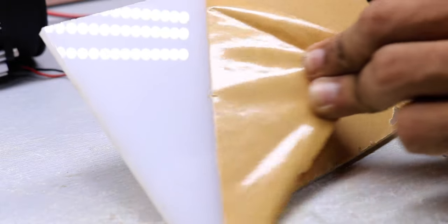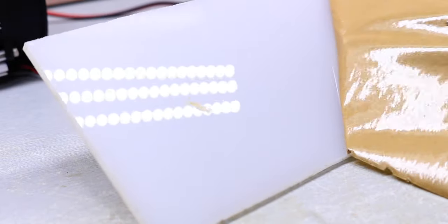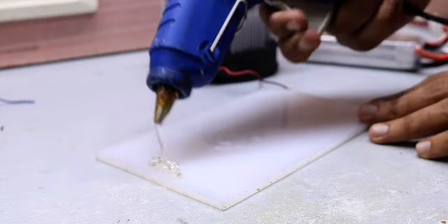Once that was over I used this 4mm thick acrylic and used some hot glue to secure the heat sink onto it.